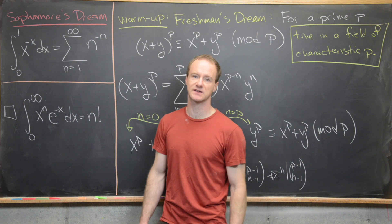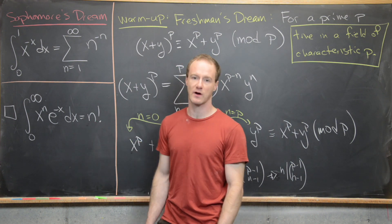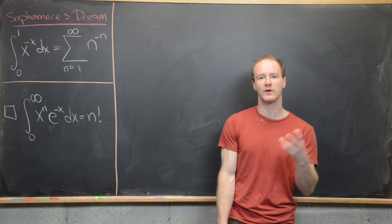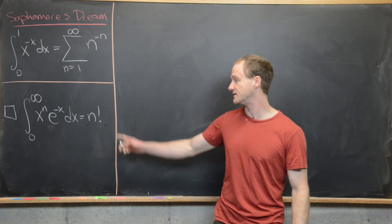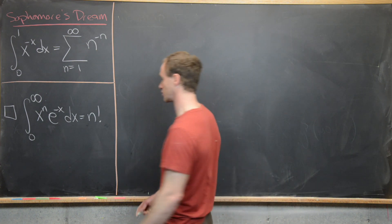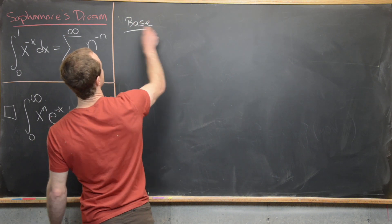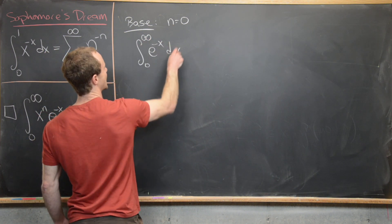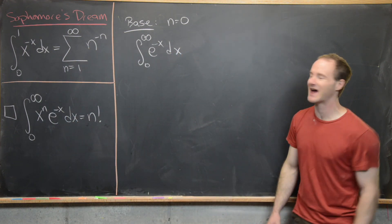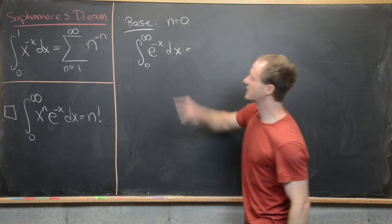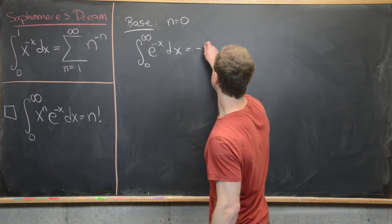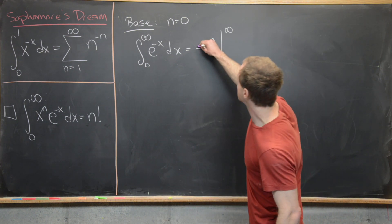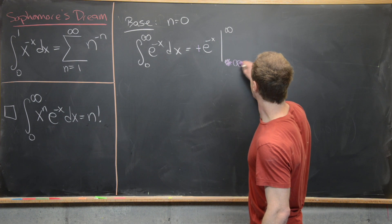Now let's move on to the main event: proving the sophomore's dream. We'll start with a preparatory fact proved by induction. The base case is n equals 0, which turns the integral into the integral from 0 to infinity of e to the minus x dx. Since x to the 0 is 1, we take the antiderivative, which is minus e to the minus x, evaluated from 0 to infinity. Taking the minus sign out and reversing the order of evaluation, we evaluate at 0 to get e to the 0 equals 1, minus the limit as x approaches infinity of e to the minus infinity, which is 0.